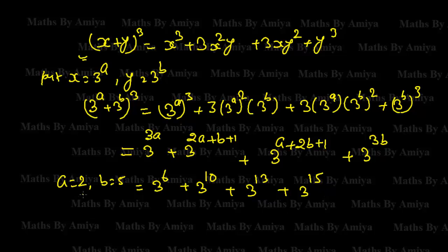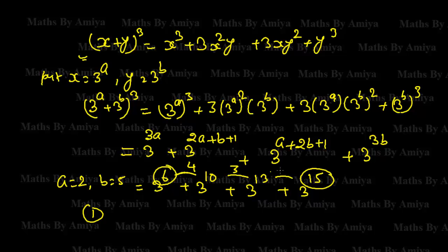Now there are two or three things to understand. First, the least power and the greatest power are both multiples of 3, that is 3a and 3b. What is the gap between the powers? The gap decreases: 4, 3, 2. So the gaps are in decreasing order by 1. If the first gap is 10, then 10, 9, 8. If 6, then 6, 5, 4.